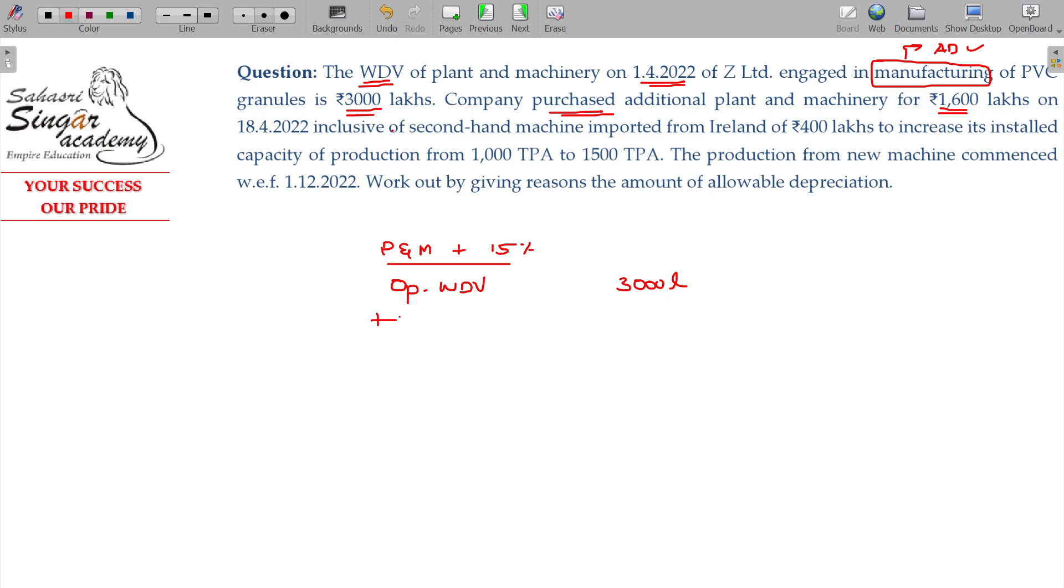Purchases falling in the same block, 1600 lakhs. On 18-4-22, more than one year inclusive of second-hand machine imported from Ireland, 400 lakhs, to increase its installed capacity of production from 1000 tons per annum to 1500 tons per annum. The production from new machine commenced on 1-12-2022.